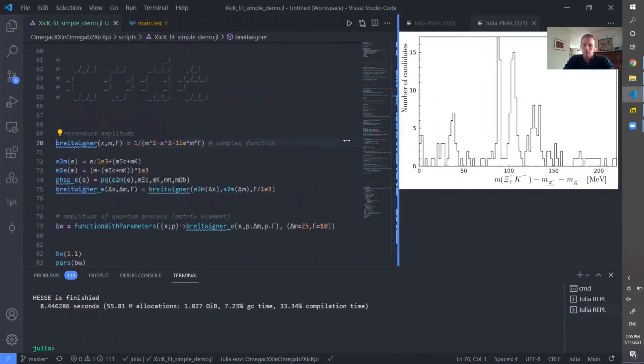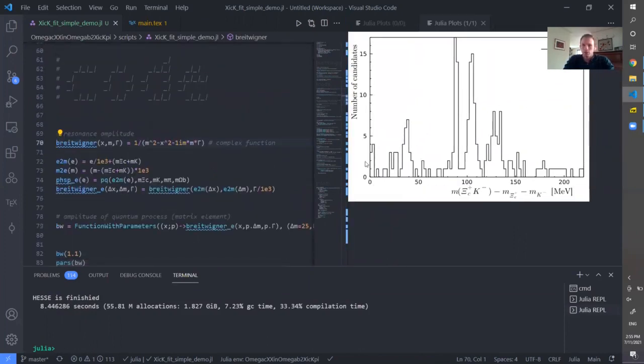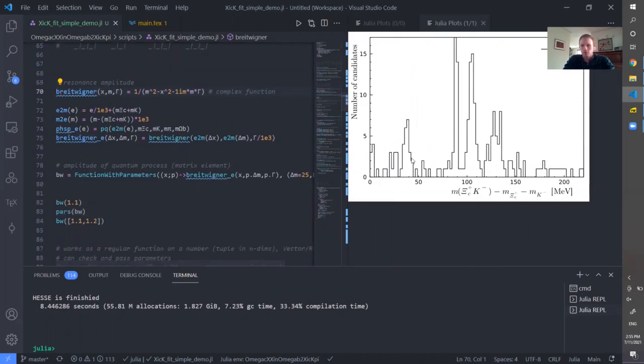So then here is how the raw data looks like. There is clearly four narrow structures and one threshold structure. And every signal structure is described by the Breit-Wigner amplitude.